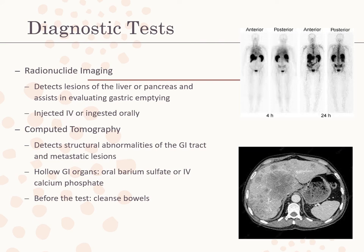CT scanning may be performed to detect structural abnormalities of the GI tract, including metastatic lesions not apparent on regular GI x-rays. Oral barium sulfate or IV calcium phosphate may provide contrast. The client is NPO for six to eight hours before the CT test; the bowel may be cleansed to reduce stool and gas, and drugs may be administered to decrease peristalsis. Continuous motion helical three-dimensional CT scans enable detailed pictures of GI organs and vessels. Colonography refers to this procedure: a small tube is inserted into the colon, air is introduced to inflate it, and computer images are produced.